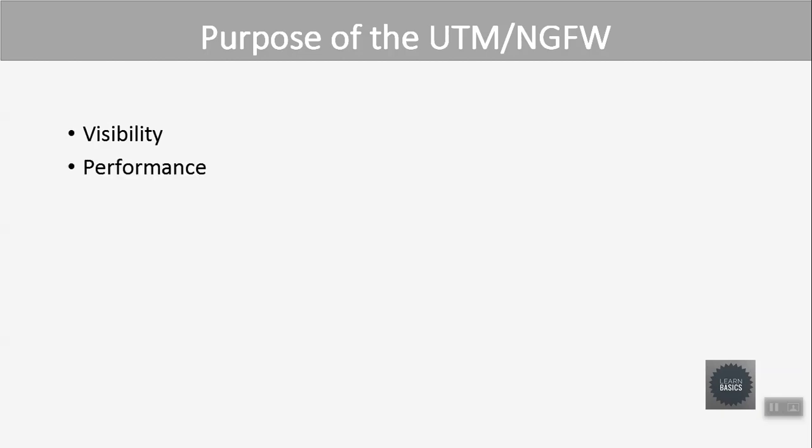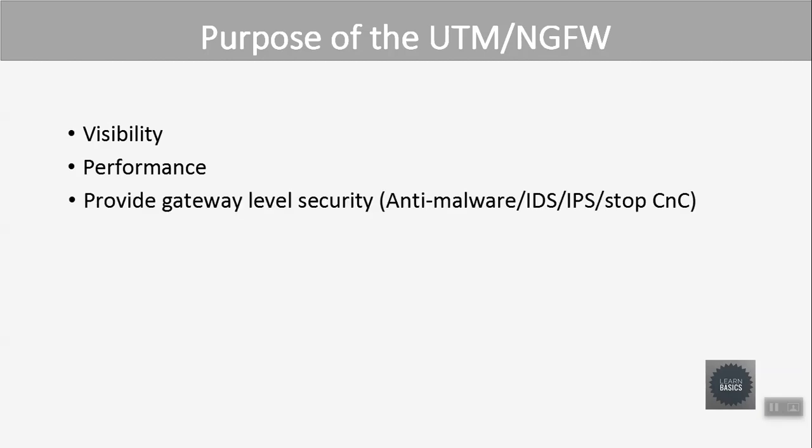The second purpose is performance — while doing all this processing, there should be no lack of performance. Next is providing gateway-level security. The main purpose of UTM and NGFW is to provide security by preventing malware and exploits with anti-malware, IDS/IPS, and by stopping C&C communications.